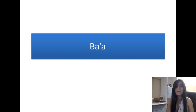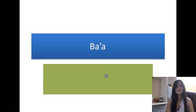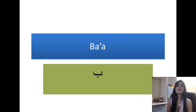Then we have the second letter which is B. And this is how we write B. Actually B is just like a B in English. The pronunciation is B.